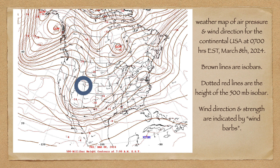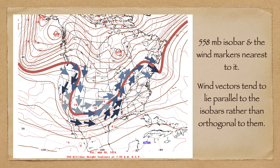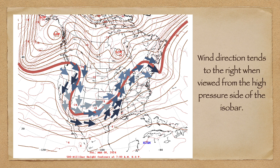Wind barbs consist of a line that is parallel to the flow of the wind, and a fletching in the direction that the wind comes from, showing the strength of the wind. Wind barbs have their own coding system, but I'm not going to go into the details of it. For this discussion, it's only important which direction the wind is moving in. In this figure, I've highlighted the 558 millibar contour and the wind barbs closest to it. We see instantly that the wind tends to flow parallel to the isobar rather than across it.